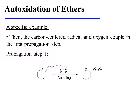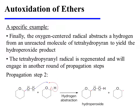In propagation step 1, the carbon-centered radical couples with oxygen to form the hydroperoxy radical. In propagation step 2, the oxygen-centered radical abstracts a hydrogen from the alpha position of an unreacted molecule of tetrahydropyrane. This results in the hydroperoxide product as well as a new carbon-centered radical that can cycle through another round of propagation steps.